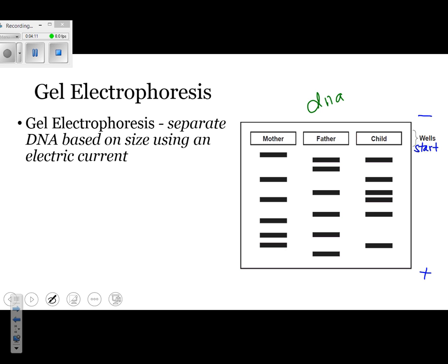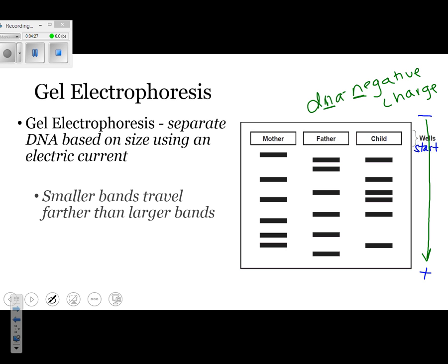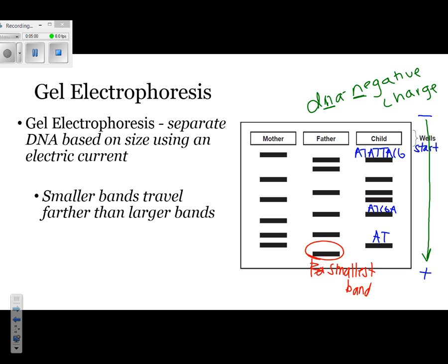DNA has a negative charge. Since it has a negative charge, it gets attracted to the positive side, so the electric current causes the DNA to run out of those wells. These bands that you see represent the number of bases that are present. The more bases that are present, the heavier that band is going to be. The small bands are able to travel further, meaning the band furthest from your starting gate is the smallest, whereas the ones at the top are your largest — they're the heaviest and just can't travel as far in a given time.